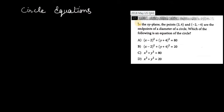Assuming you've given it a go, let's start to read it. In the xy-plane, the points (2, 4) and (-2, -4) are the endpoints of the diameter of a circle. Which of the following is an equation of the circle?